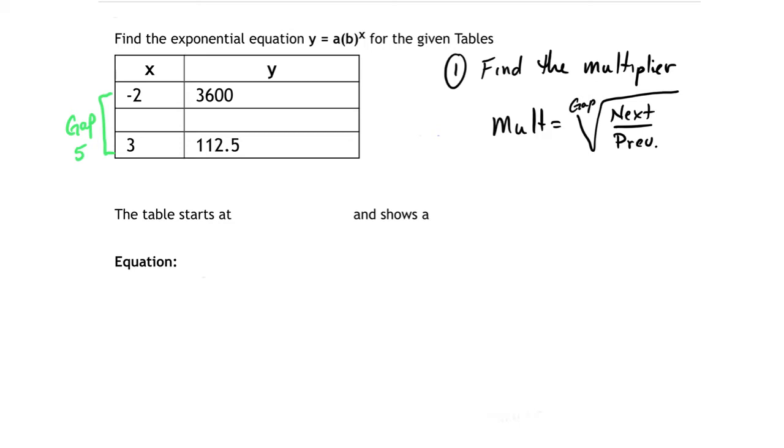Next, we have to decide what is next and what is previous. The next is always the bottom of the table and the previous will always be the first one, whatever is on the top of the table. So essentially now we're going to take this information and we're going to try to find the gap root, which is the fifth root of 112, the next, right here, divided by the previous, which is this one up here.